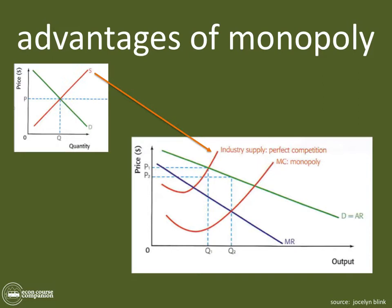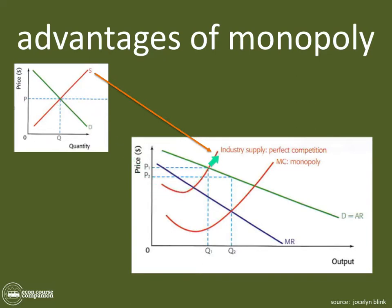Looking at the diagram again: this is the demand and average revenue curve, this is the marginal revenue curve — which should extend down below zero — and here is the MC, the marginal cost curve. The question is how Jocelyn Blink drew the industry supply curve in perfect competition on the same diagram. It makes perfect sense because the industry supply curve in perfect competition is this same curve, just drawn slightly differently.